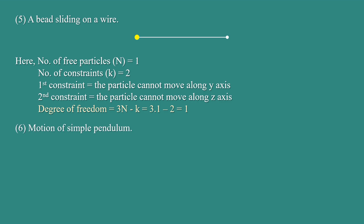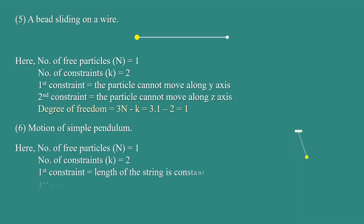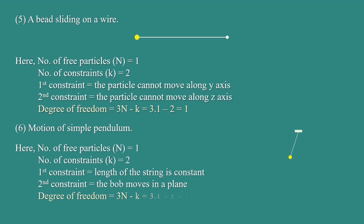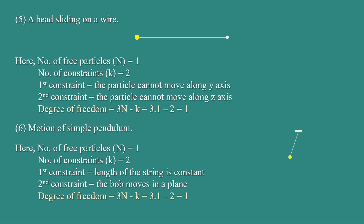Motion of a simple pendulum. Here, the number of free particles N = 1 and the number of constraints K = 2. The first constraint is that the length of the string is constant, and the second constraint is that the bob moves in a plane. Therefore, degree of freedom = 3N − K = 3(1) − 2 = 1.